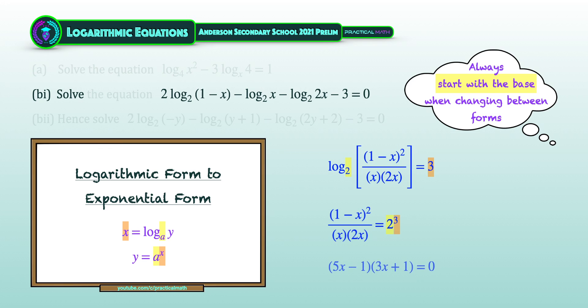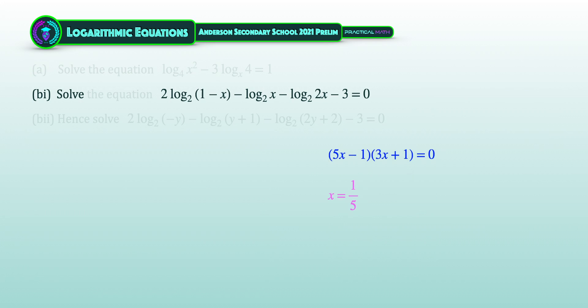Then we perform algebraic expansion and factorization, giving us the product of (5x minus 1) and (3x plus 1) equal to 0. Solving for x gives the answers x equal to 1 over 5, or x equal to negative 1 third.